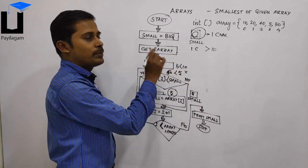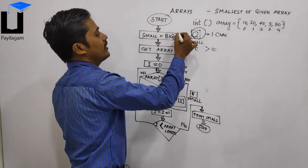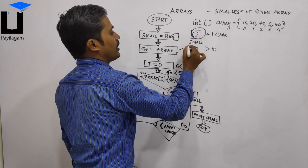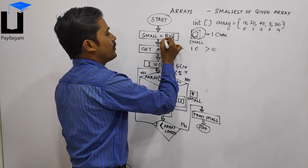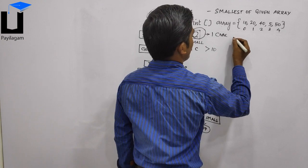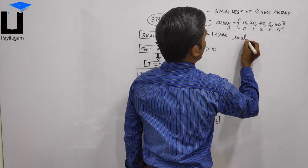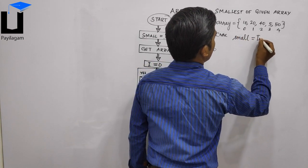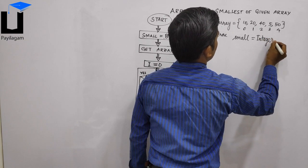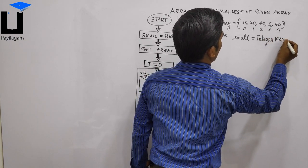Now using this flowchart, we write the program. If you want to initialize the small value, there is a class in Java — Integer — with a max underscore value field.